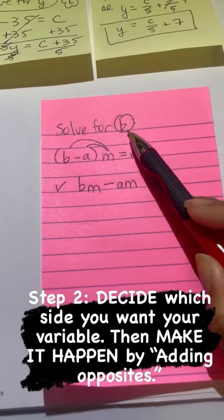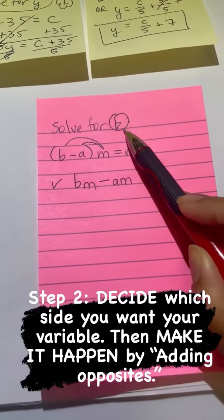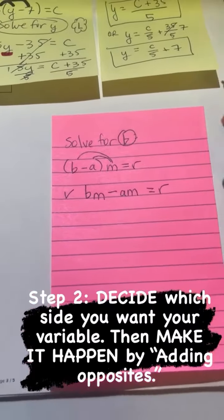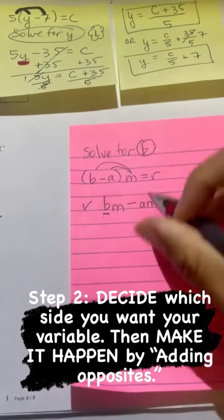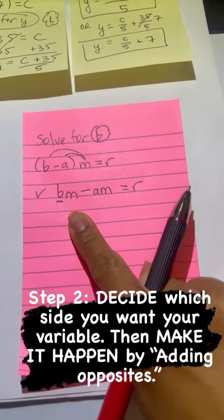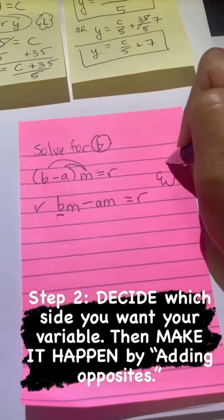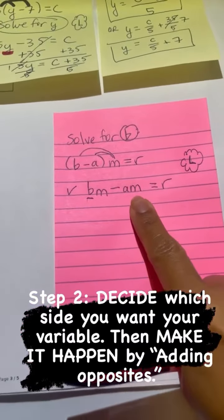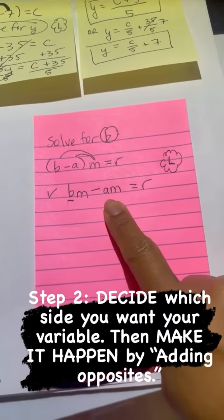The next thing we want to do is we want B to be sitting all by itself because we want to solve for B. So here's my B. B is right here. Anything that does not have a B, I'm going to push it to the right side. So in my brain, I'm thinking to myself, I want B on the left side. This does not have a B in it. How do I get rid of this?